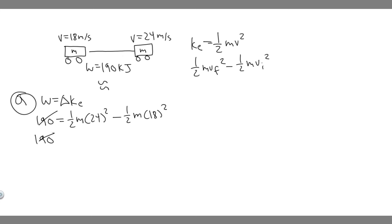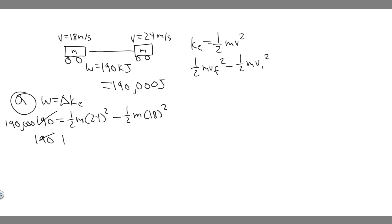To convert, you do 190 times 1,000, because there are 1,000 joules for every kilojoule. So this is equal to 190,000 joules. Keep in mind it's 190,000 because we need it in joules, not kilojoules. So 190,000 equals one-half m times 24 squared minus 18 squared. We can factor out one-half m from both terms, giving us 190,000 equals one-half m times (24 squared minus 18 squared).